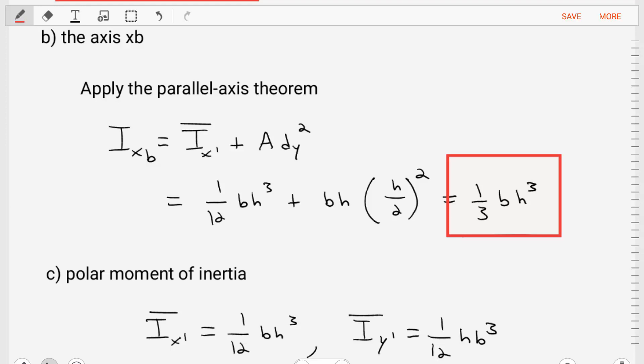we find that the area moment of inertia about the xb-axes is equal to one-third base times height cubed. And then again, we can find an equivalent version for the moment of inertia around the yb-axes is one-third the height times the base cubed.